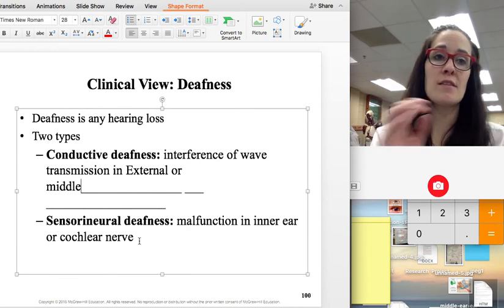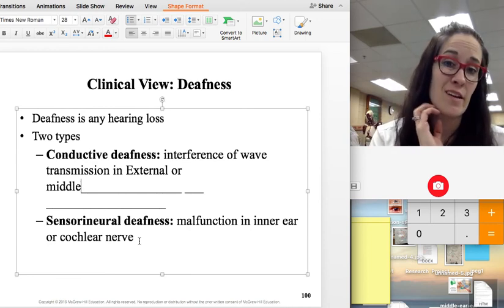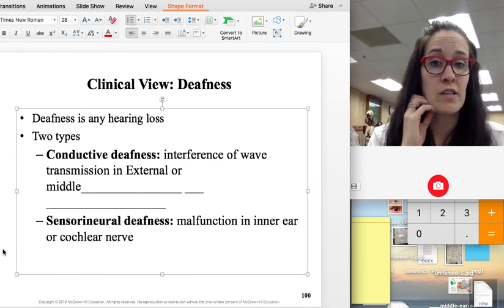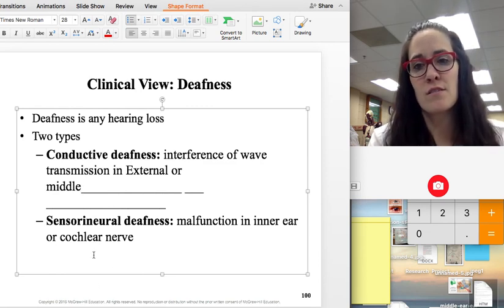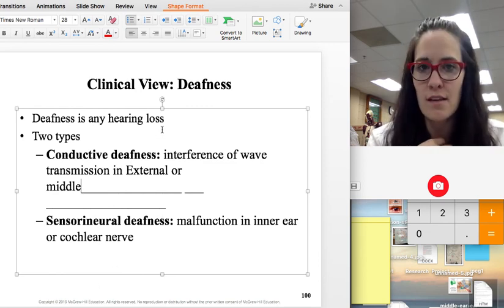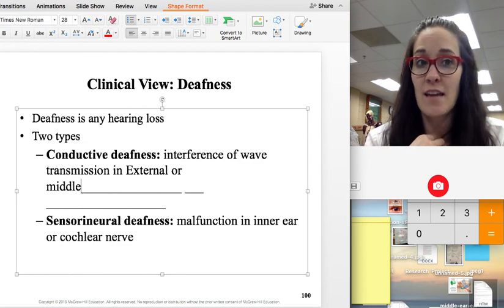Sensorineural deafness is damage to something in the inner ear or even in that cochlear nerve. So usually genetic deafness is problems with the cochlear nerve itself. And that's the end of that part.